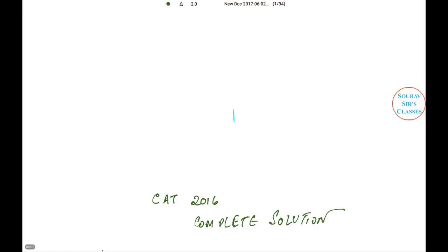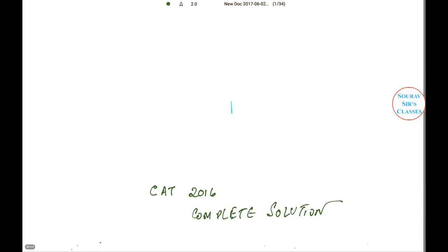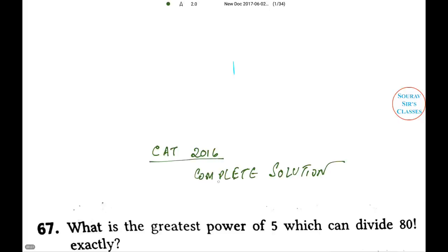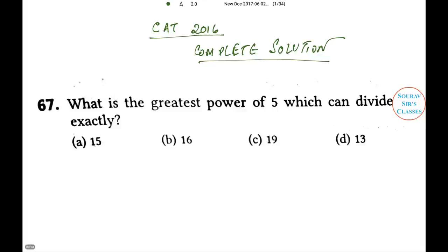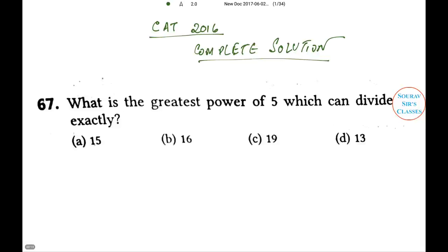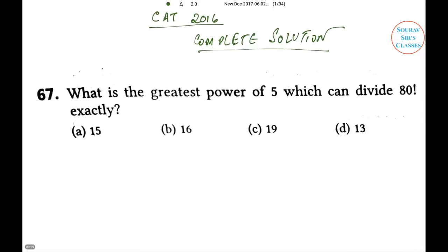Hello students and welcome to a new video from Sources Classes. In this video I will be solving CAT 2016 quantitative aptitude questions. The first question is: what is the greatest power of 5 which can divide 80 factorial exactly? In this kind of question, whenever you have a factorial structure, let me show you how to do it.